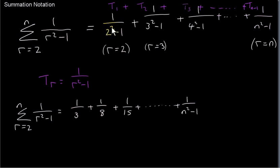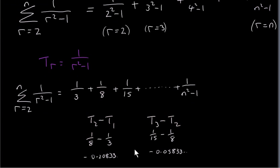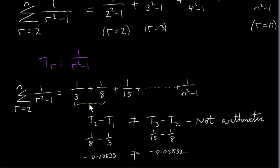Simplifying the terms: 2 squared minus 1 is 3, 3 squared minus 1 is 8, 4 squared minus 1 is 15. This series is not arithmetic. For it to be arithmetic, t2 minus t1 should equal t3 minus t2, but calculating those two differences gives different answers. So we only need two pairs of consecutive terms to confirm: since the differences aren't constant, it's not an arithmetic series.